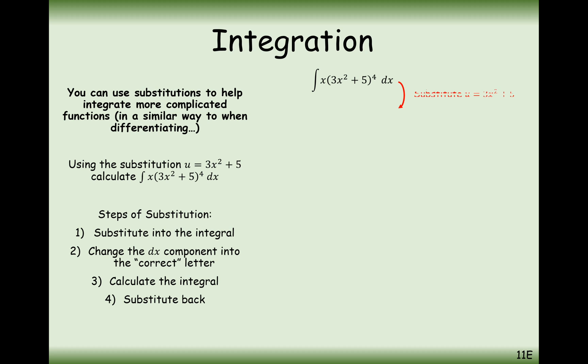First of all, we substitute in u for 3x squared plus 5. We've still got this x at the front, so let's see how that might simplify. But first things first, I think I'll change the dx and see if anything happens at this point here.